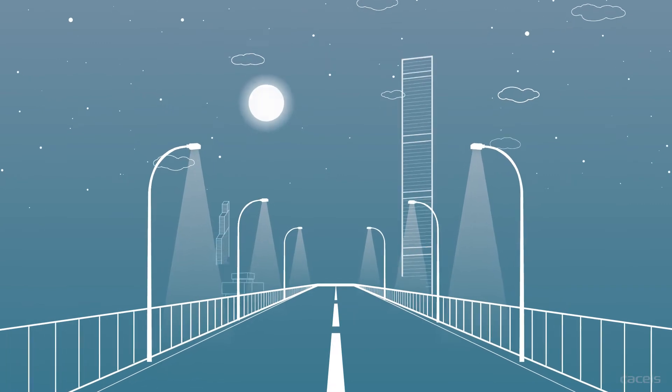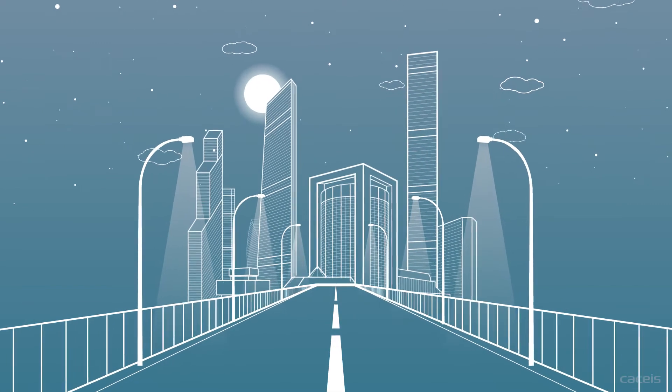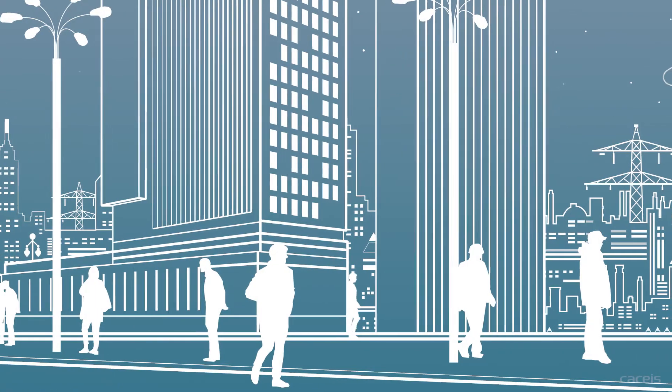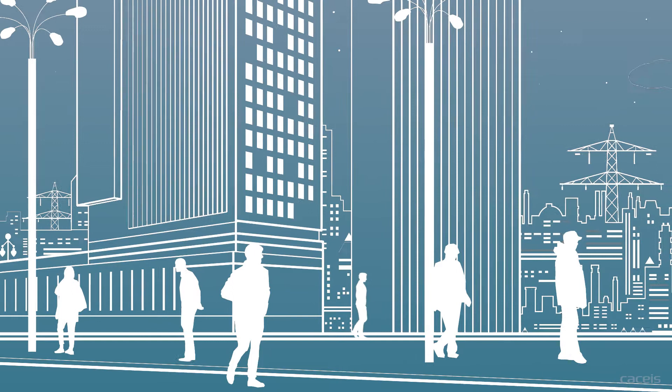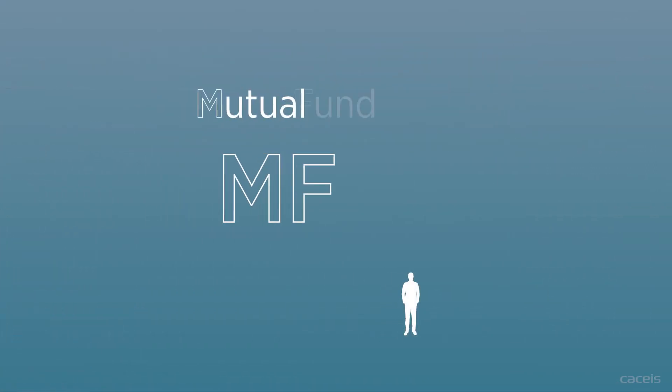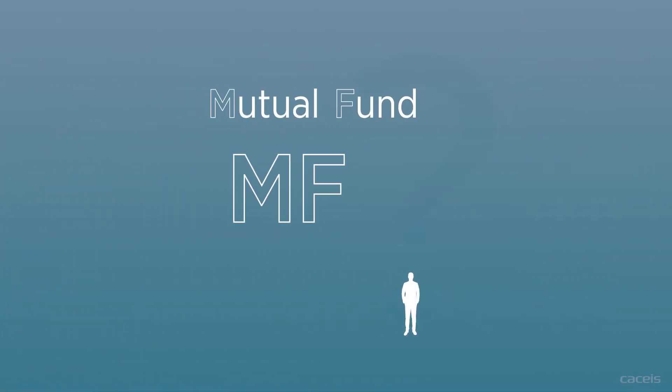Let's start at the beginning of the chain with the example of John, an investor. After a meeting with his banker, he decides to invest by buying units of a mutual fund.